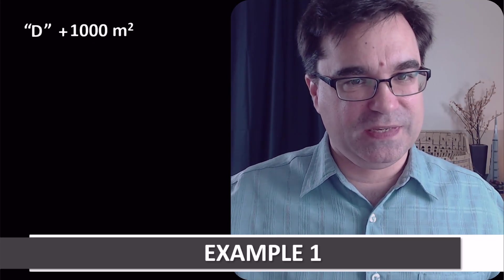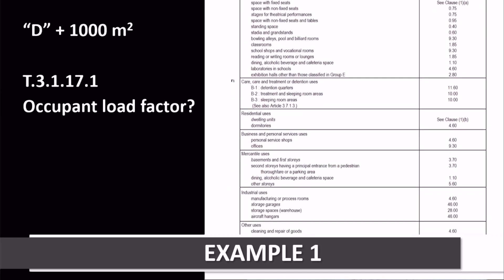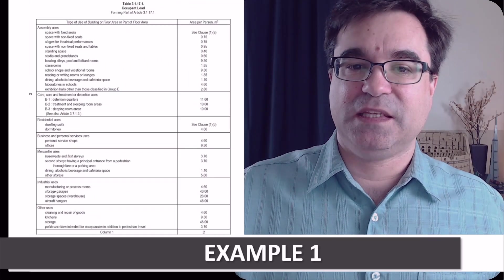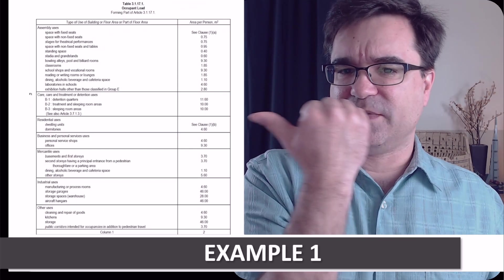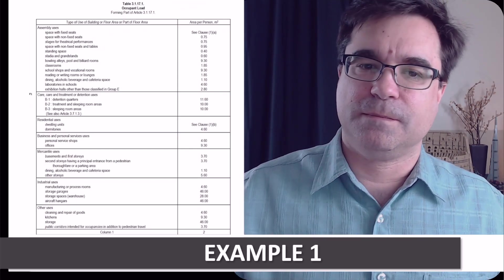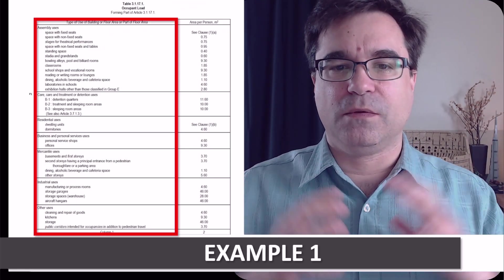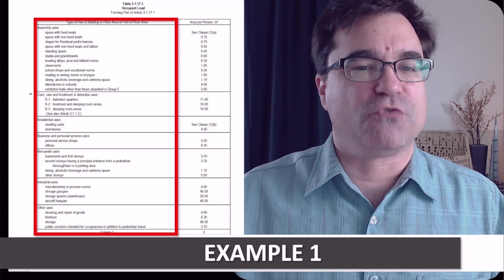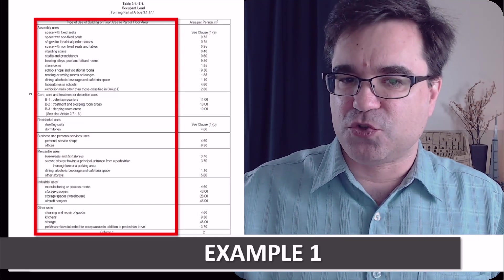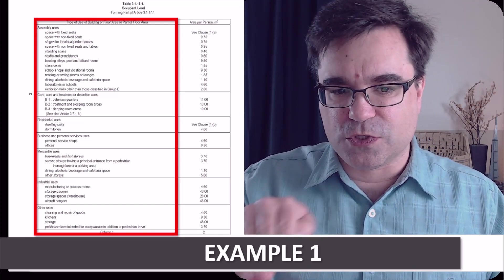Terrific. Terrific. Now, let's use Table 3.1.17.1 to determine the occupant load factor. As you can see, Table 3.1.17.1 is arranged in two columns. The left column lists all major occupancies from assembly to industrial, and it does it in six horizontal rows, right?